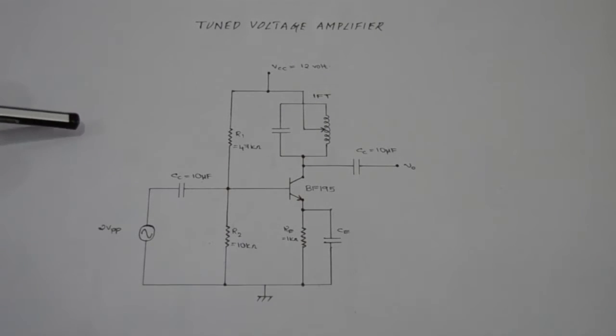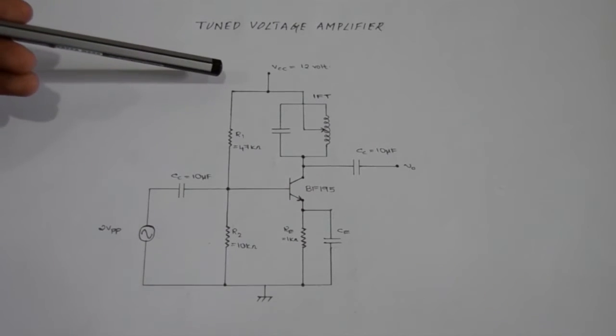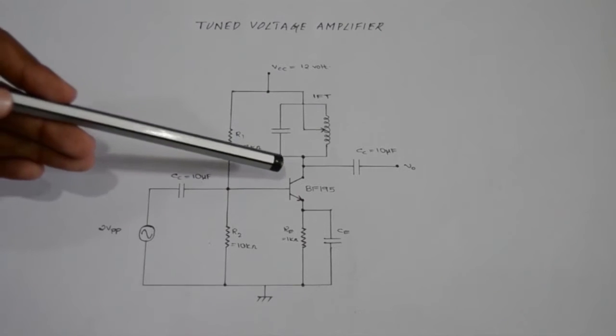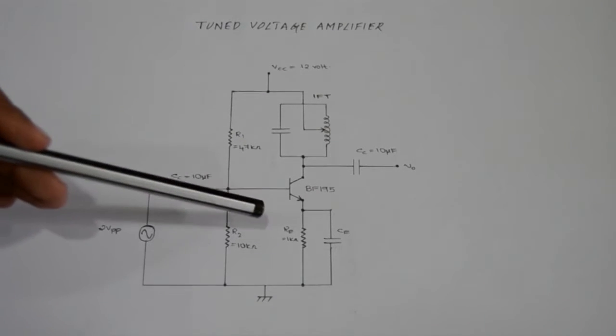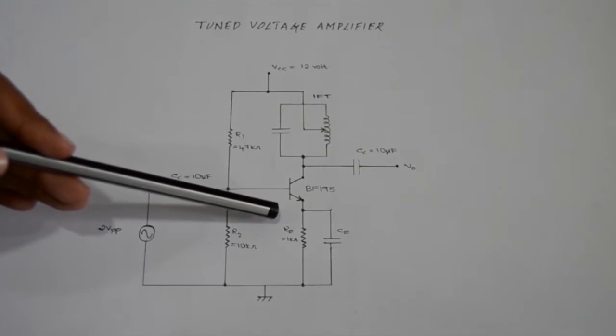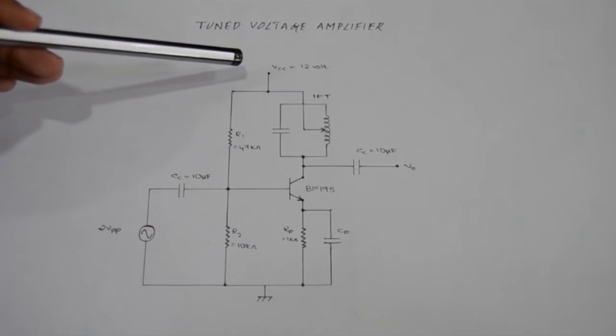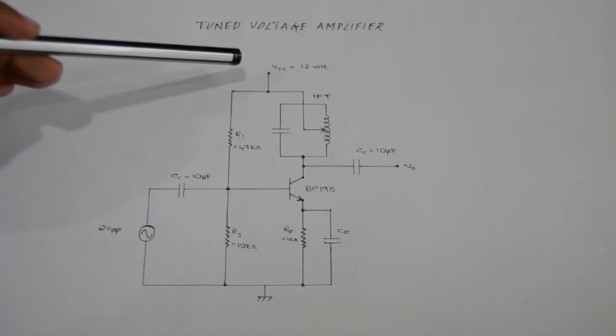This is a circuit of tuned voltage amplifier to produce a sine wave of 455 kHz frequency. Here an input of 2 volt peak to peak is applied from the signal generator. A VCC of 12 volt is applied so that the VCE will be 10 volt and the voltage across the emitter resistance will be 2 volt. VCC is provided as 12 volt considering an output swing of 20%.